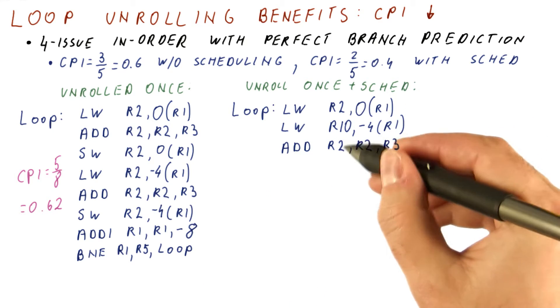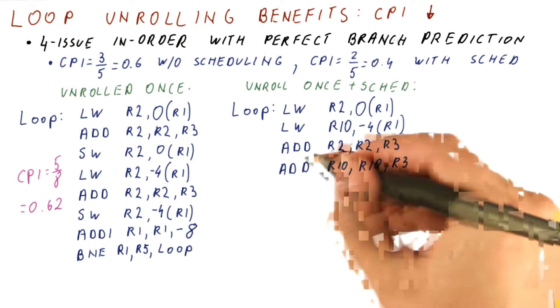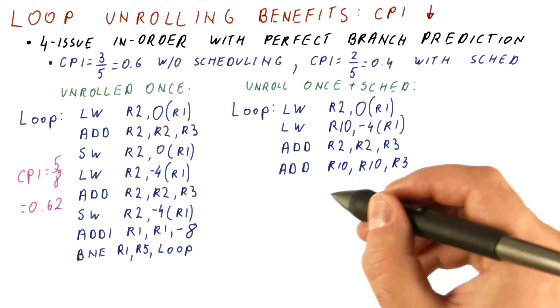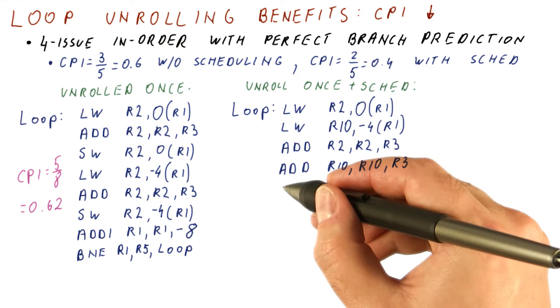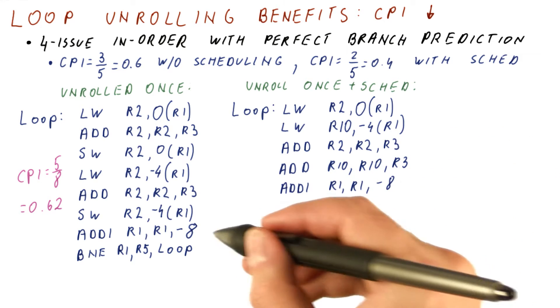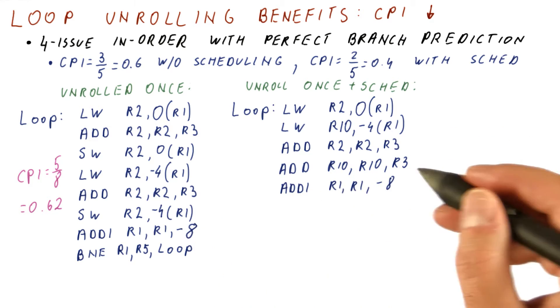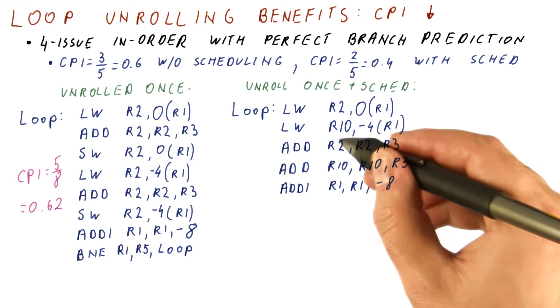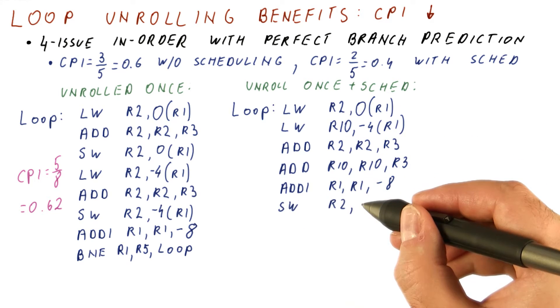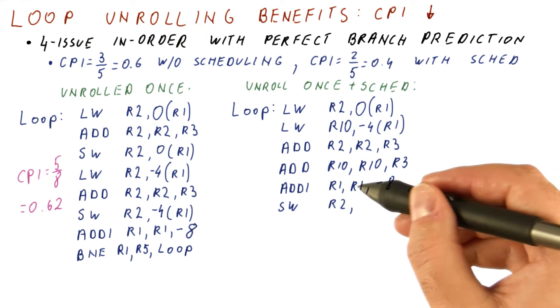Now that we have done this, we can do the add for the first iteration of the loop, and also the one for the second iteration of the loop, in the same cycle. And in the same cycle, we can do the add i instruction for moving the pointer. Now, these two will produce the results that the stores need. So next cycle, we can do the stores.